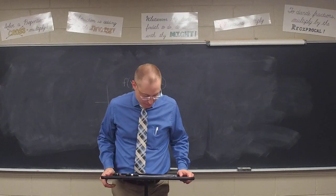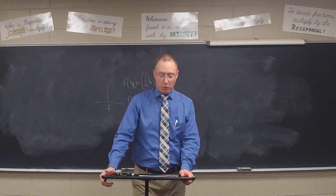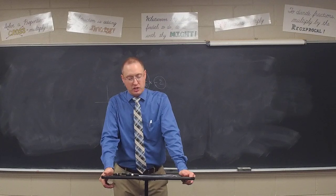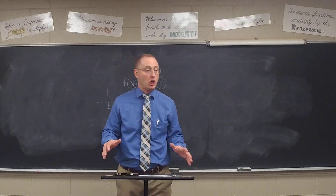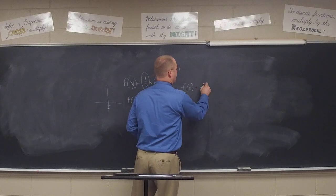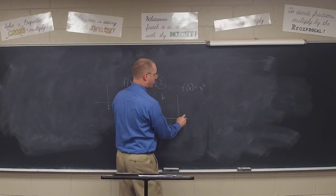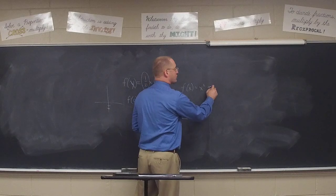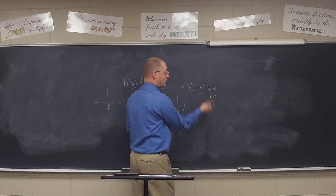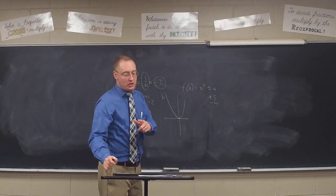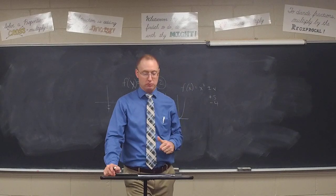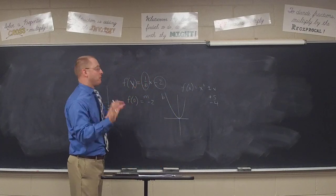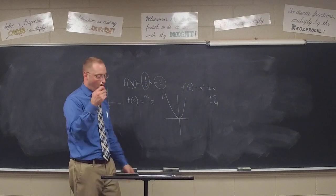Number nine: the function f is defined by f of x equals 7x cubed. The graph of y equals g of x is the result of shifting the graph of y equals f of x down two units. Which equation defines g? You've got to go back to what we talked about with parabolas in Algebra 2 — if you want to shift a function vertically, you add or subtract a number. To shift 7x cubed down two, you slap a negative 2 on the back of it, so the answer is letter D.